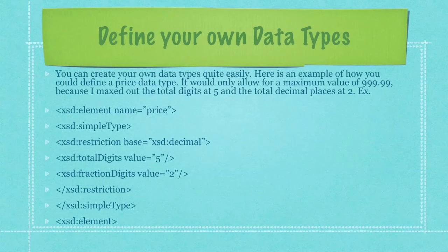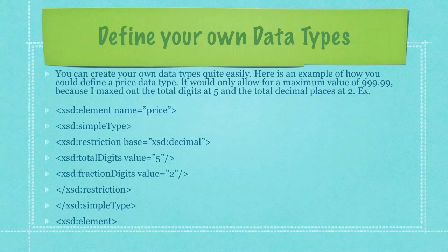You can create your own data types quite easily as well. Here's an example of how you could define a price data type. It would only allow for a maximum value of $999.99 because I maxed out the total digits at 5 and the total decimal places at 2 — using the already defined decimal data type and stating the maximum number of digits at 5 and the maximum decimal places at 2.